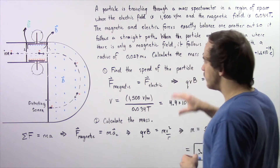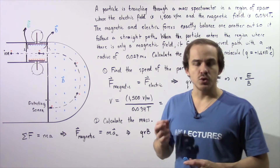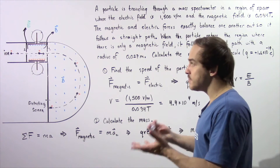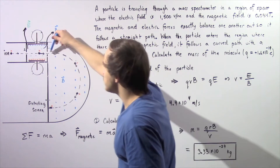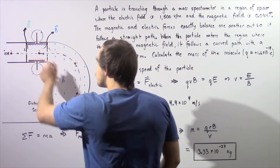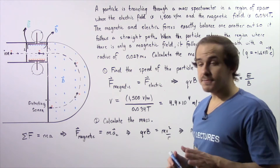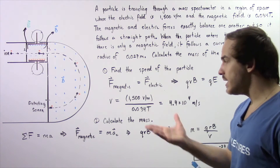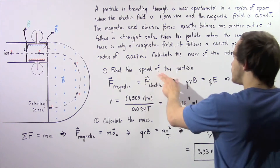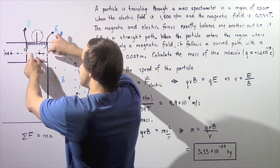We're going to solve this example in two steps. In step one, we want to calculate the magnitude of the velocity — the speed that our particle experiences as it travels along its pathway. Notice the speed of our particle is the same in both regions. We calculate the speed in part one because in part two we can use it to calculate the mass.